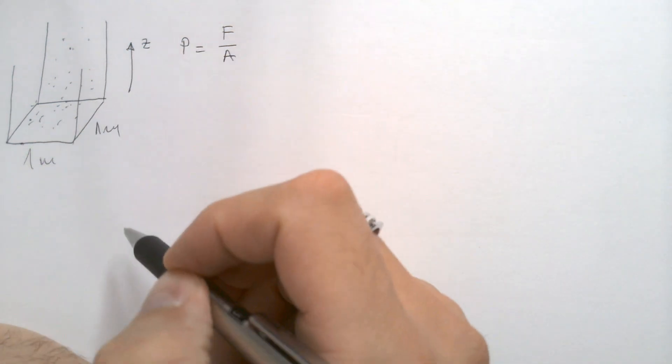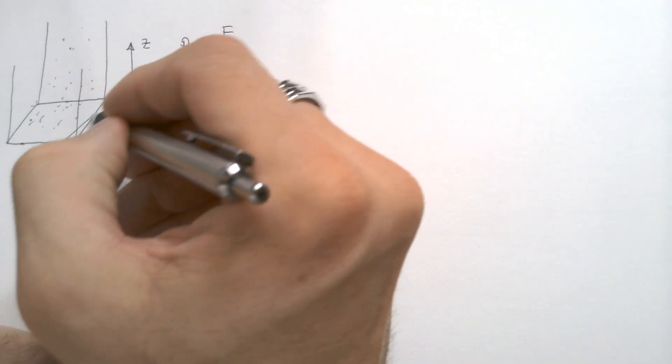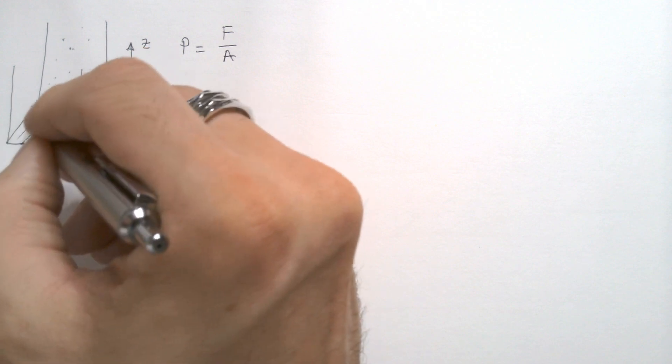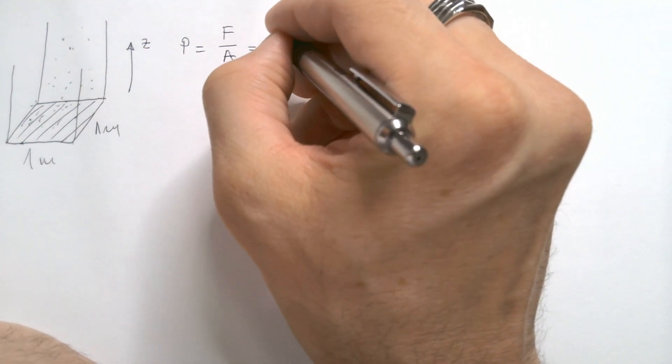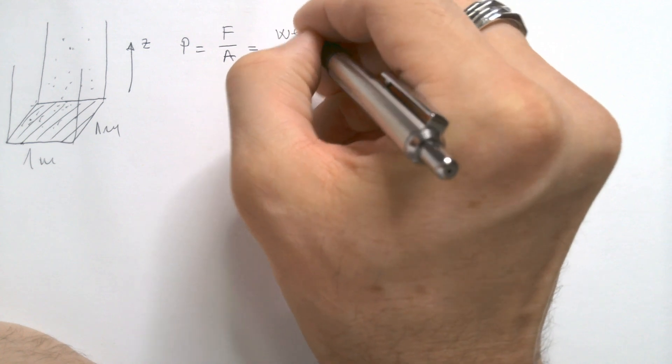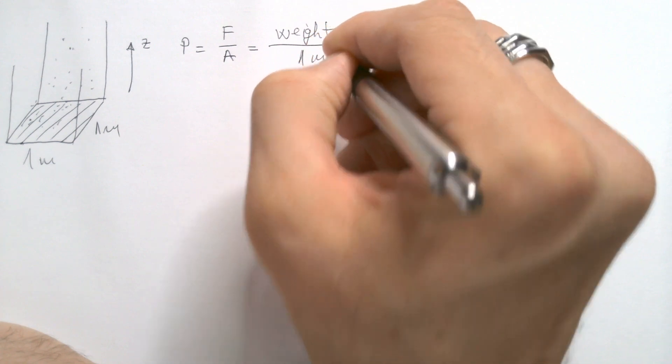But what is the force in this case? Well, it's the weight of this air column acting on this square meter. So that would be weight of the air divided by one square meter.